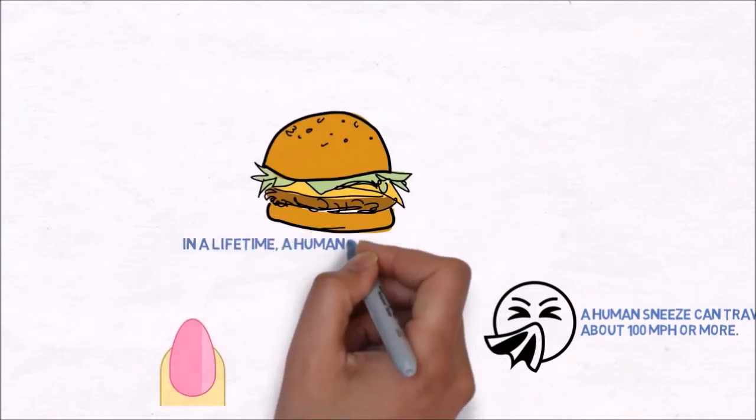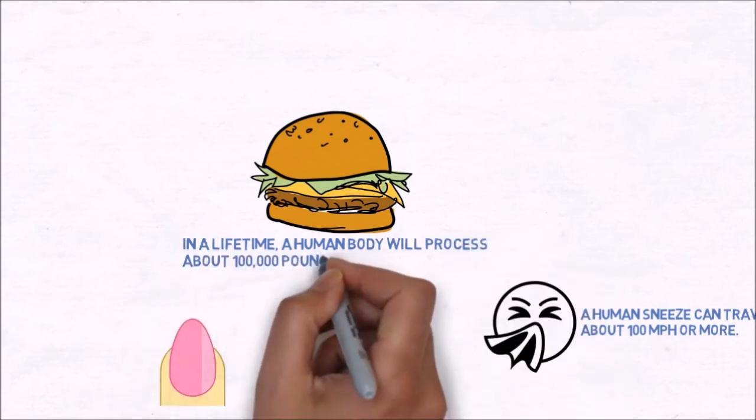In a lifetime, a human body will process about 100,000 pounds of food.